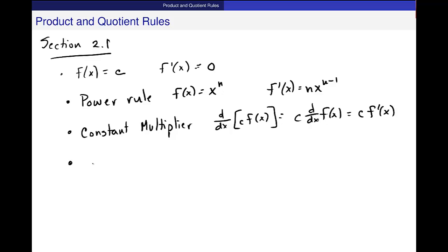And then also the addition subtraction rule, which says if I want to take the derivative across things that are added together, I just take the derivative of each piece. So those are the four basic things that we've covered so far. These are the four that we've covered so far.